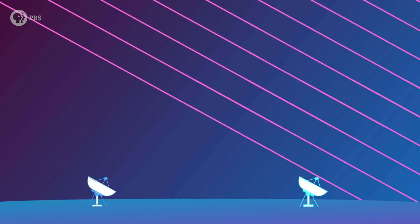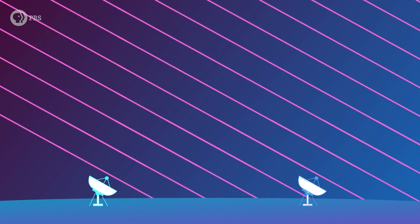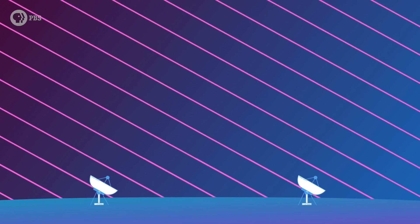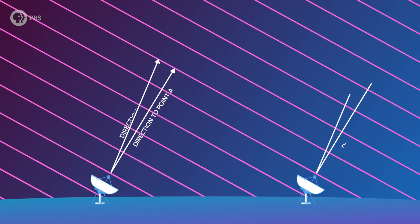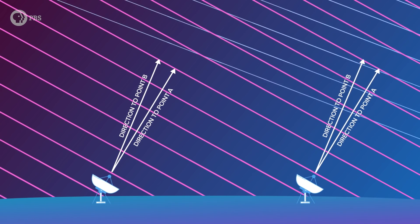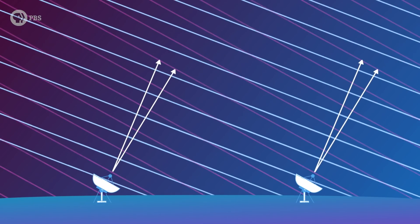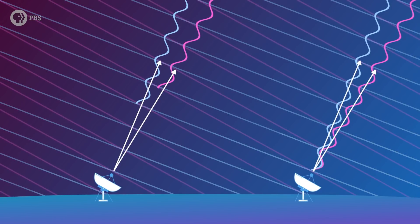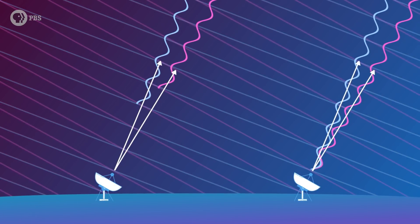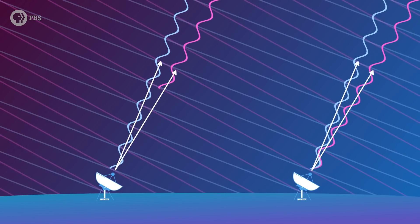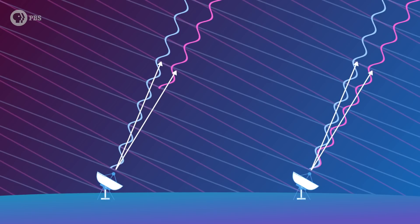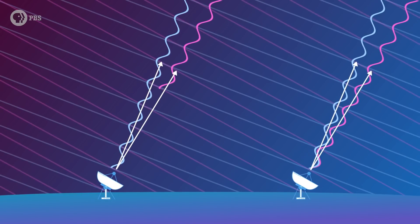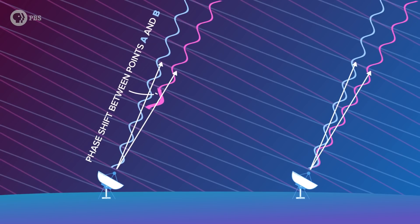Interferometry is a way of combining the light taken by two or more telescopes separated by some distance to massively improve their resolution. We could think of light from a very distant point as coming in a series of plane waves. A given wave front will reach one telescope slightly before the other, so they arrive at a different part of their wave cycle. There's a phase difference between them, and that phase difference itself is different for light coming from different points on the sky.